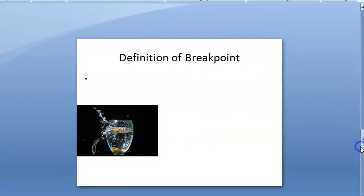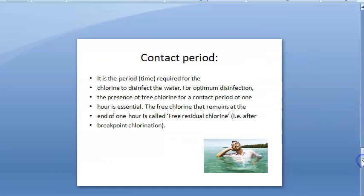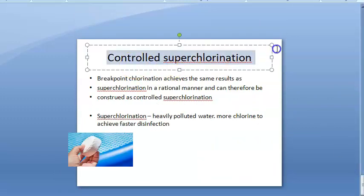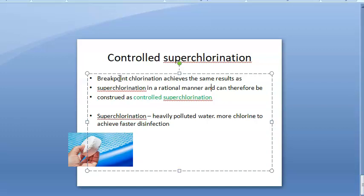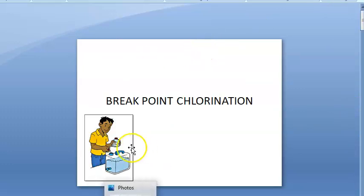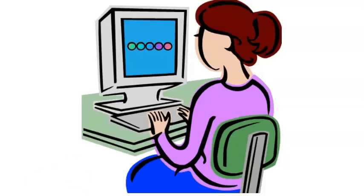Breakpoint chlorination is nothing but controlled super chlorination. Super chlorination is where excess chlorine is added to achieve disinfection faster, but breakpoint chlorination is better — it is a controlled way of achieving super chlorination. That's it for this video on breakpoint chlorination.